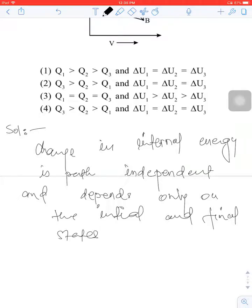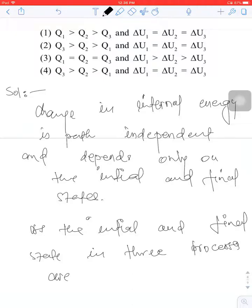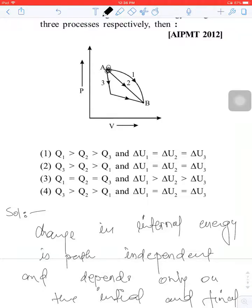In the three processes, the initial and final state are the same. All the processes have initial position A and final position B. The initial and final positions are the same.